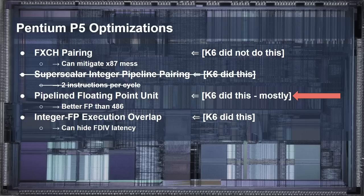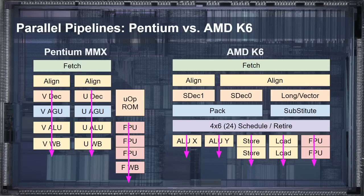That just leaves one last optimization to look into: the integer and floating-point overlapping. Since the K6 is an out-of-order execution processor, this was an obvious feature — but maybe there's more to the story. The first question would be, how can integer and floating-point execution overlap in the first place? If you look back at the block diagrams, you can see that both processors have distinct pipeline paths. The Pentium has two integer pipelines and one floating-point pipeline, while the AMD K6 has two integer pipelines, a load pipeline, a store pipeline, and a floating-point pipeline. Given that resources are not shared across the pipelines, you can have an instruction in each of these paths simultaneously — that's where you get the overlap from.